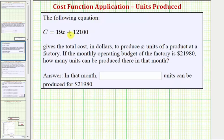The following equation, C equals 19x plus 12,100, gives the total cost in dollars to produce x units of a product at a factory.